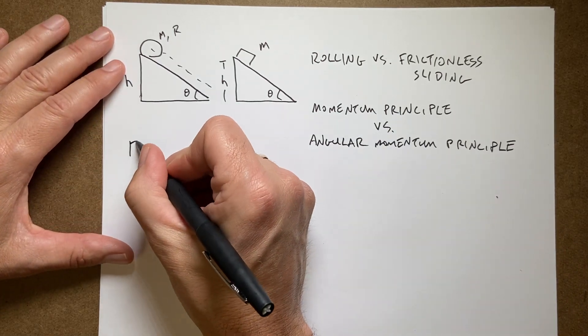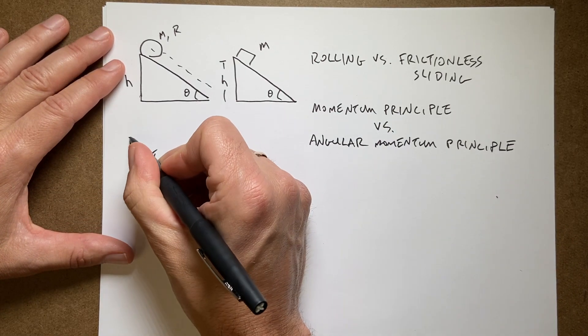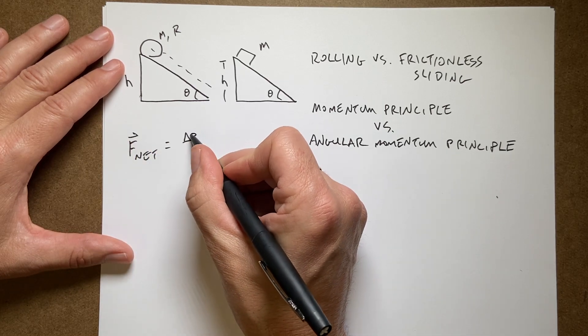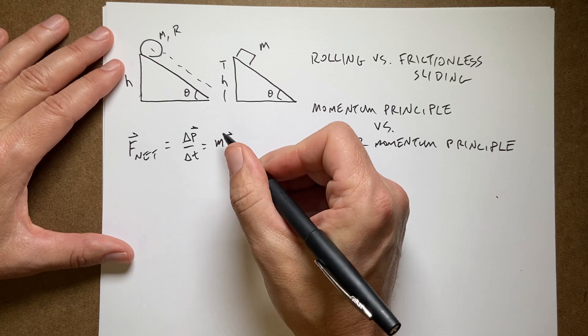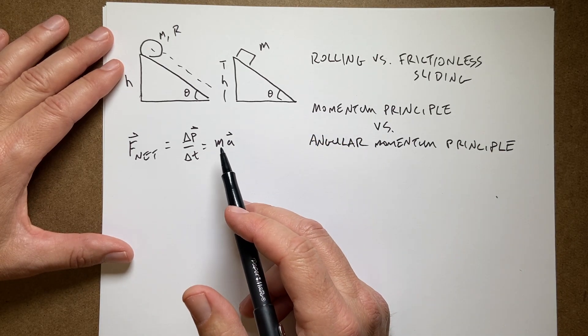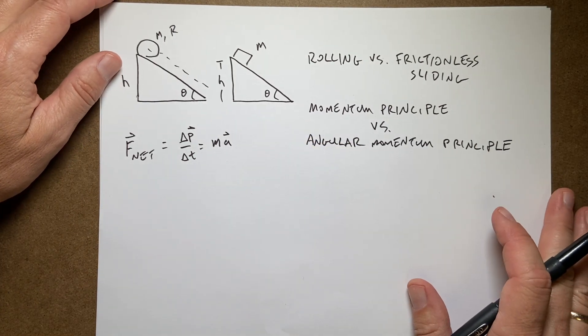So the momentum principle says that the net force on an object is equal to the change in momentum over the change in time, which is also equal to mass times acceleration. I'm going to use this mass times acceleration version. I consider it to be the same thing.